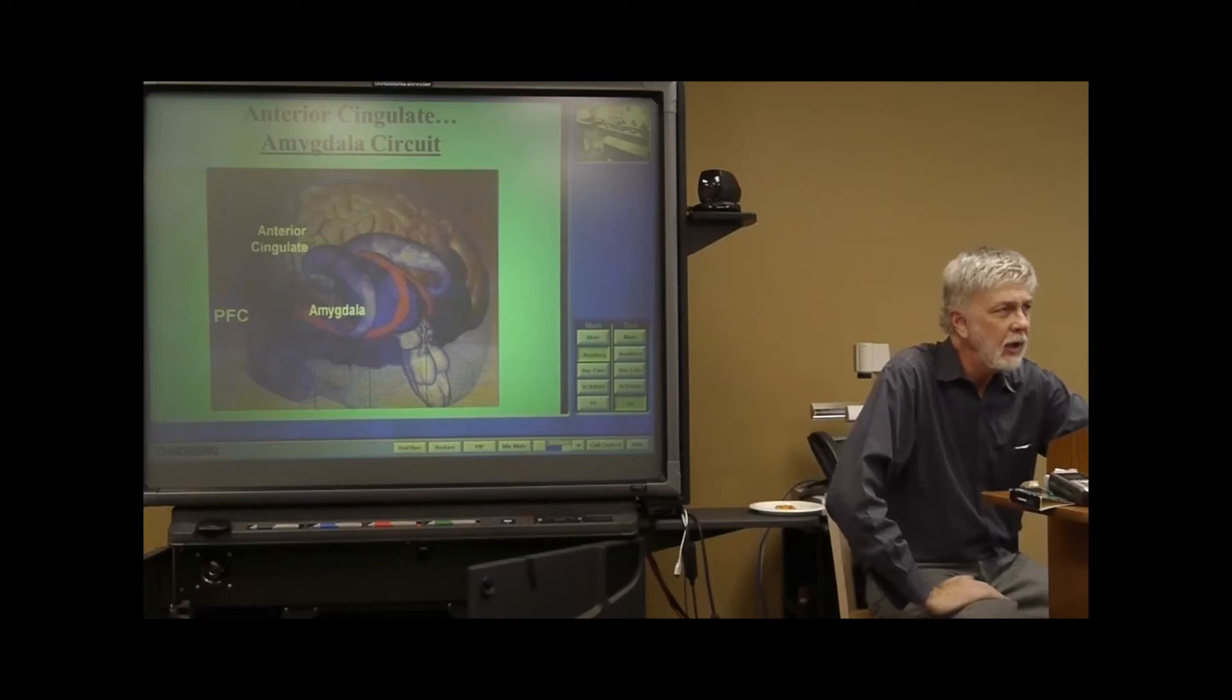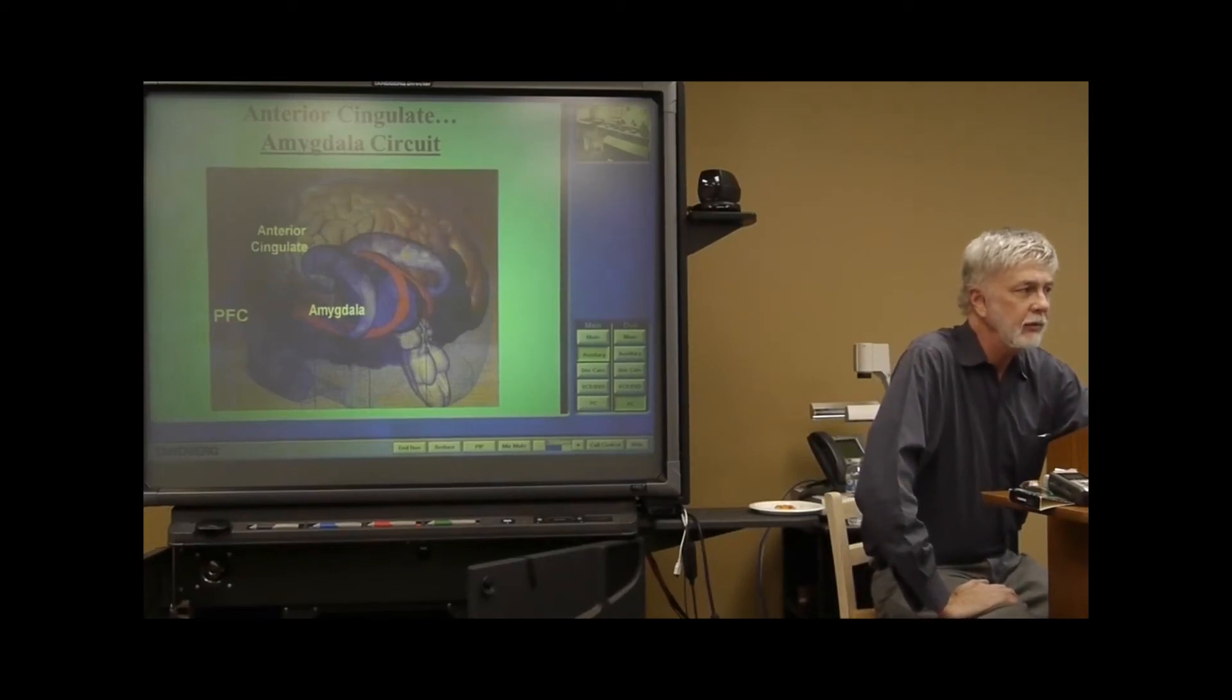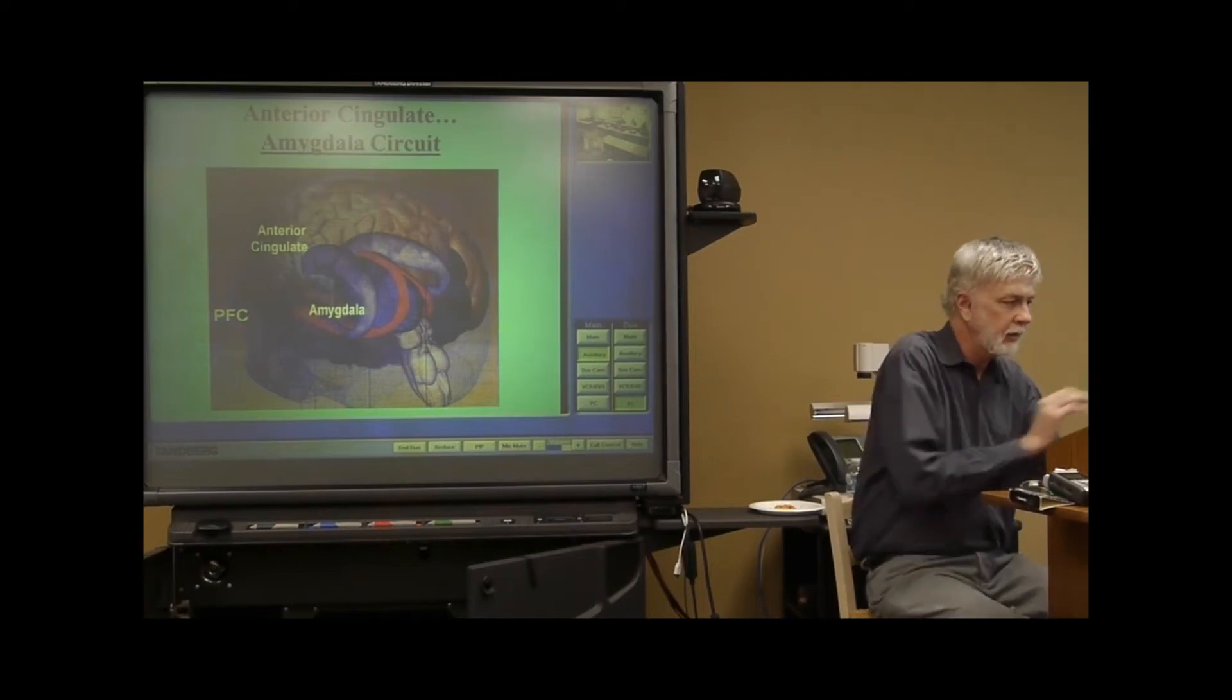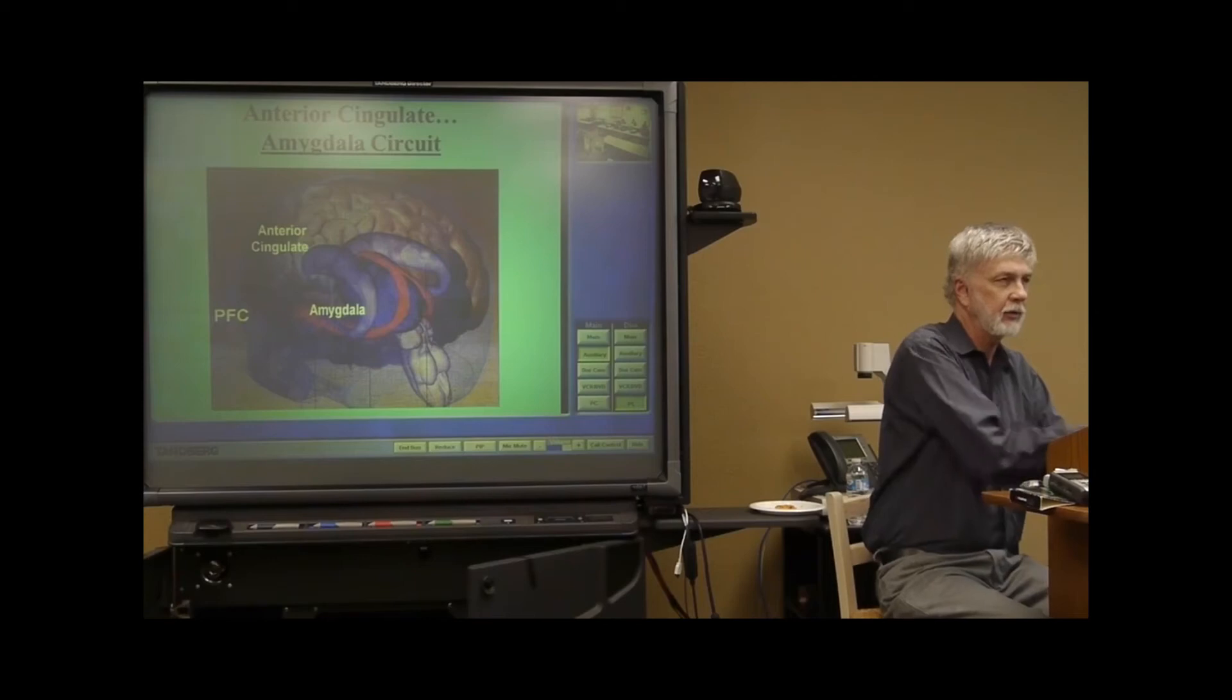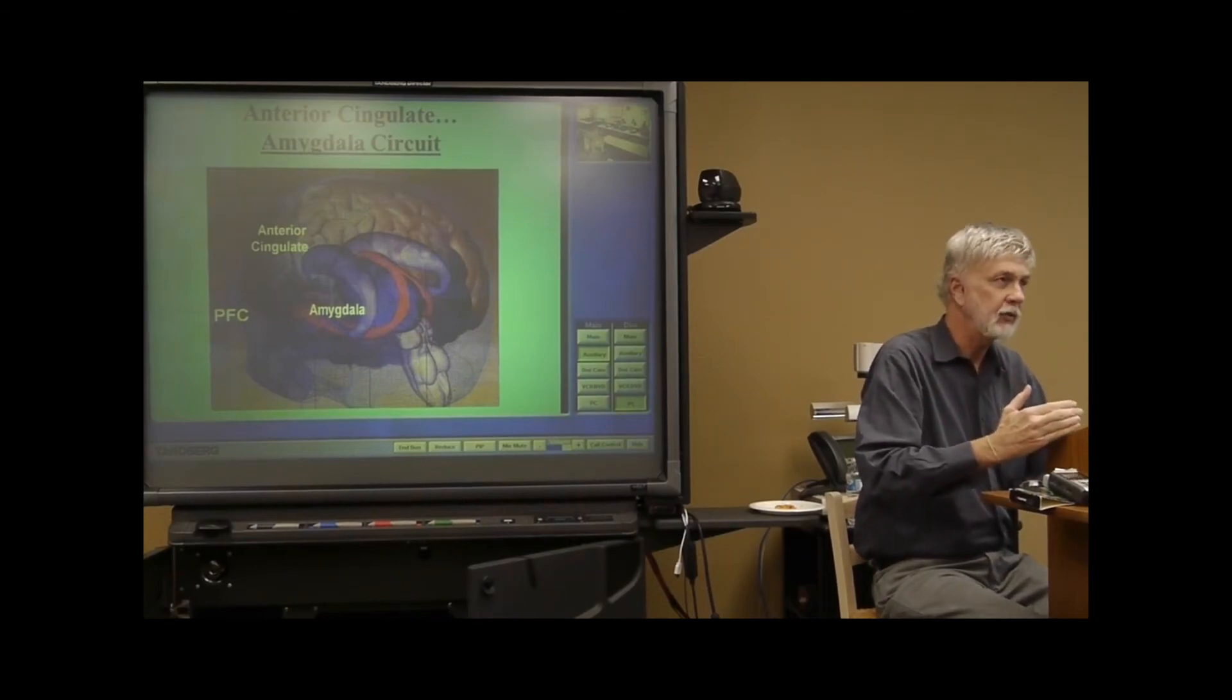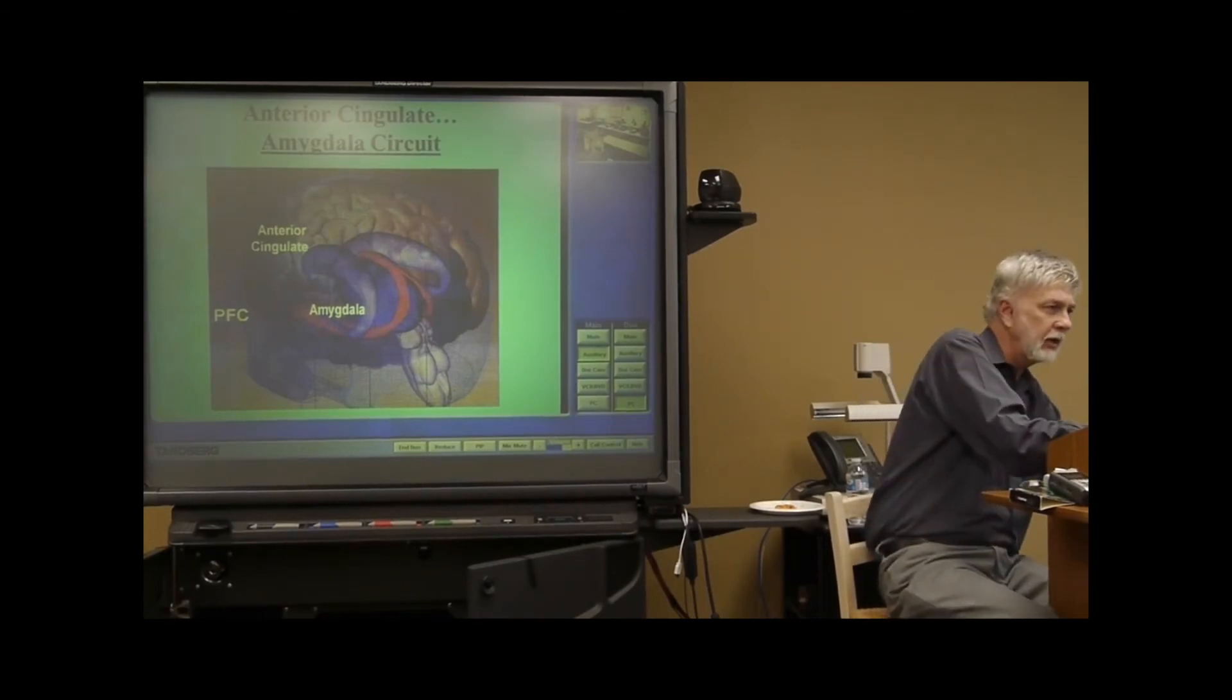There's yet another circuit that begins with the anterior cingulate, and this is the anterior cingulate amygdala circuit. Now, we talked last week about the amygdala playing an important role in the perception of potential danger in the environment, and so it plays a huge role in fear but also in anxiety and anxiety disorders.